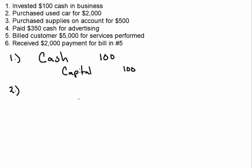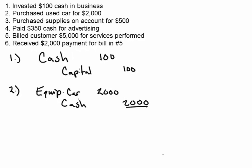Number two: purchased used car for $2,000. Do we have cash in this transaction? Yes — we have $2,000 going out, so we know we're going to credit cash. What's coming into the business is the used car, so we're going to go ahead and debit equipment — which will be the car, you can put 'dash car' if you'd like — for $2,000. We're purchasing it with cash, so cash is going out of the business and we will credit that. Credit makes an asset go down for $2,000, so cash is going down and equipment is going up for $2,000.